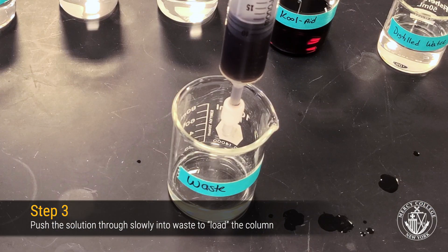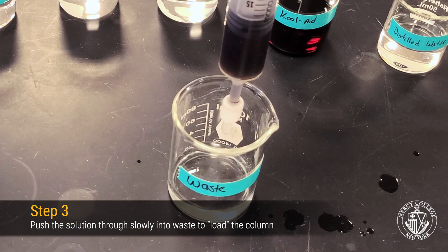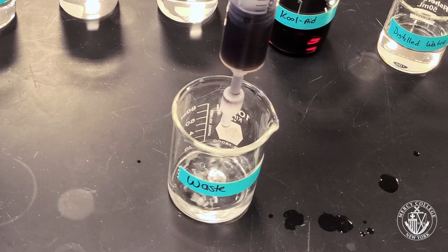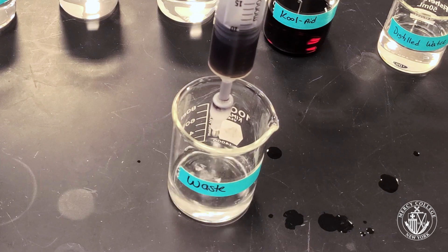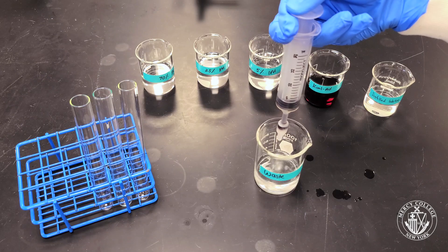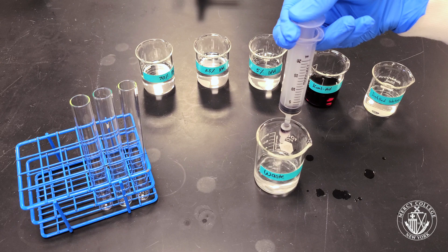This puts our Kool-Aid mixture on the column so that we can extract the individual colors using different concentrations of isopropyl alcohol in the next step. The liquid should come through clear. All of the grape coloring should be left behind on the column.